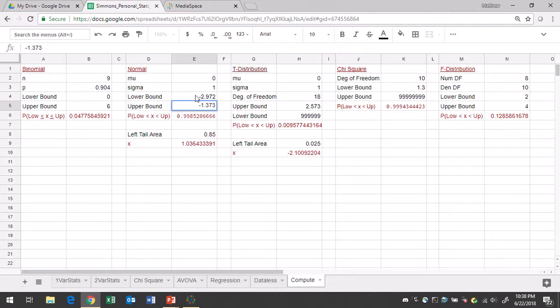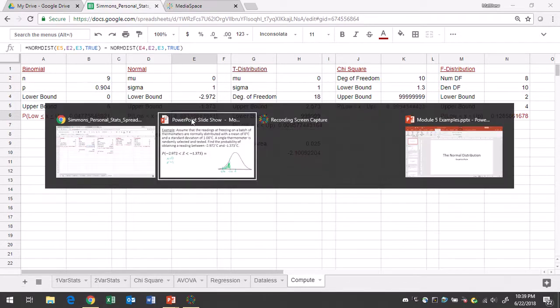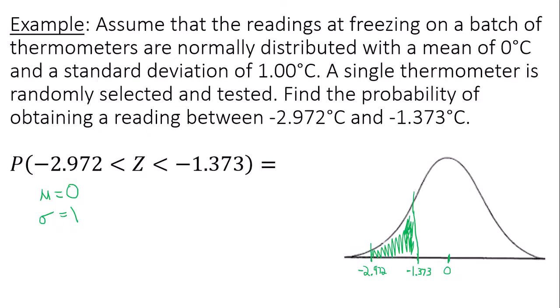My probability, which is in cell E6, is to four decimal places 0.0834. So it would be 0.0834. That was found using our technology. Thanks for watching.